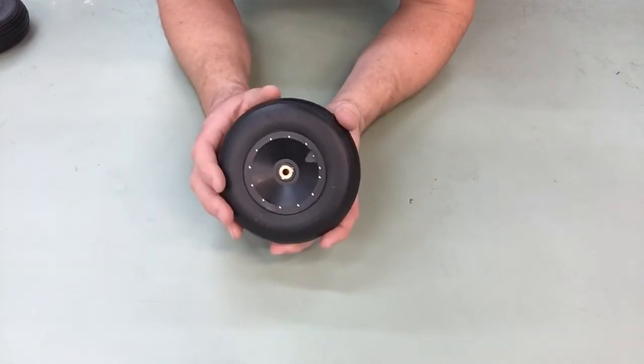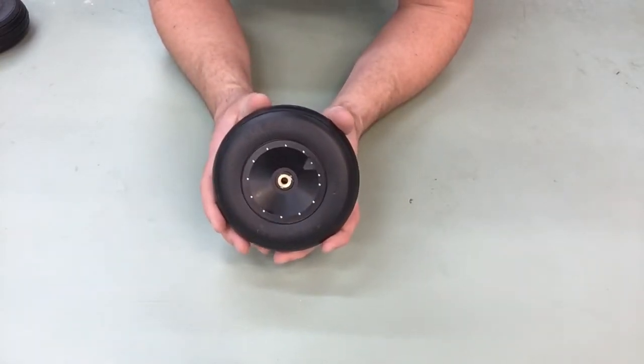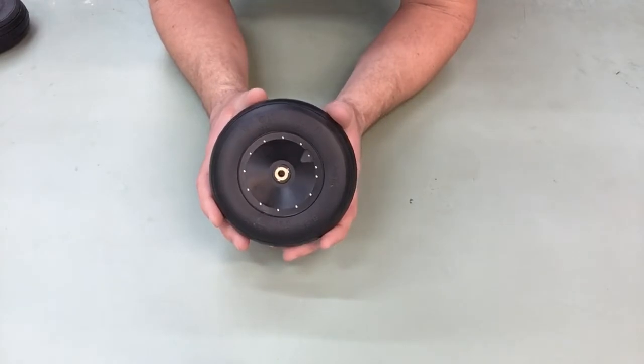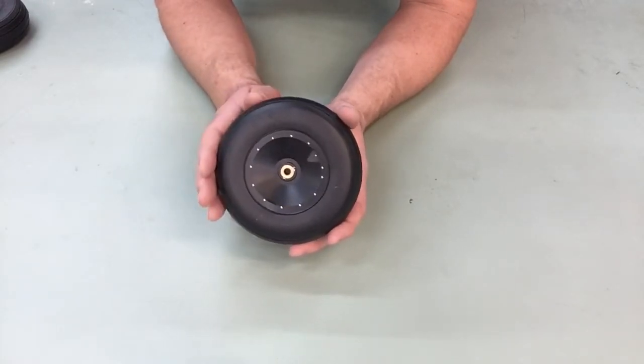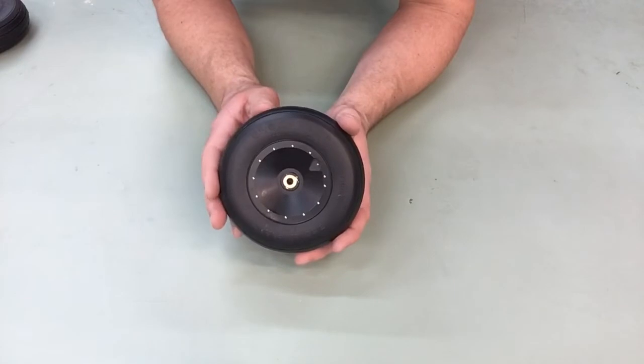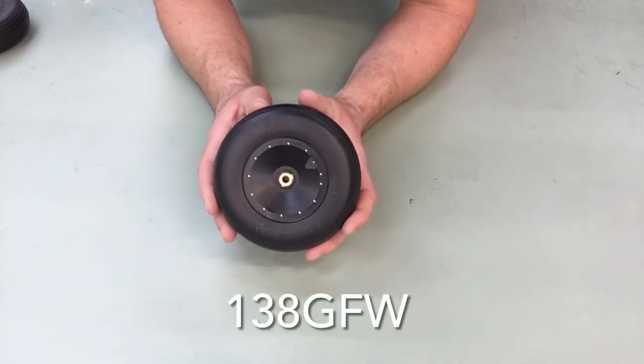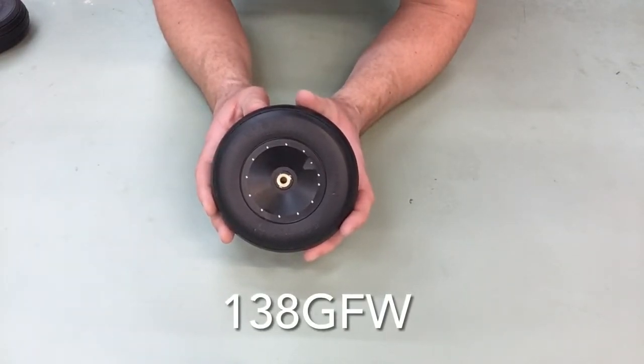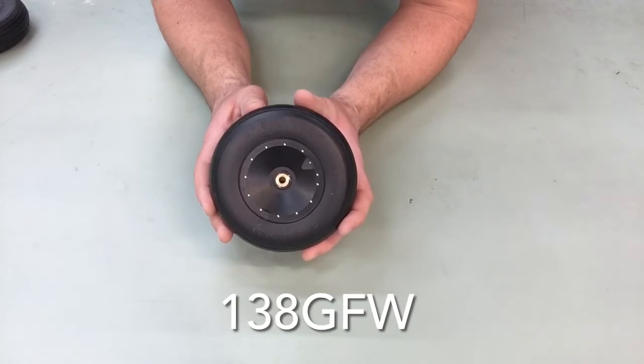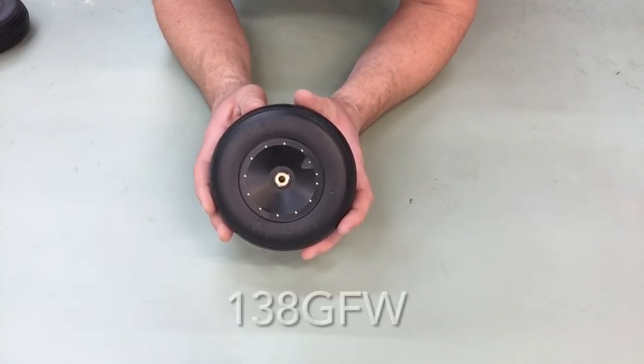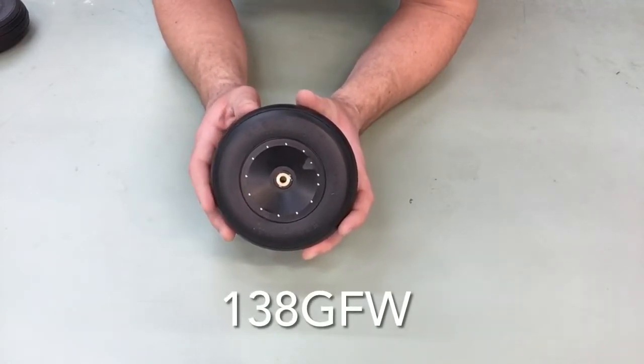You see the beautiful detailing. So really finish off your giant scale Focke-Wulf. So if you got any further questions on our Focke-Wulf, this is part number 138FW—or sorry, 138G as in George, FW. And I'll have that part number listed below.